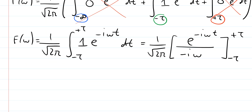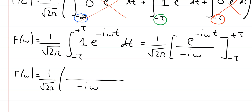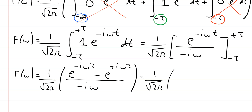Putting in the limits, f(ω) equals 1 over the square root of 2π, times 1 over minus iω, times the quantity e^{-iωτ} minus e^{+iωτ}. We then get rid of the minus sign in the denominator by switching the signs of the two terms in the numerator, giving 1 over the square root of 2π, times 1 over iω, times e^{+iωτ} minus e^{-iωτ}.